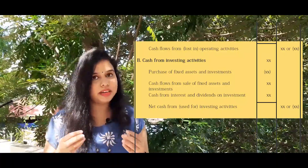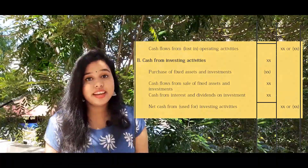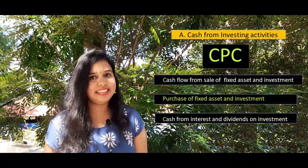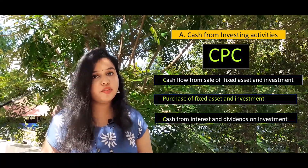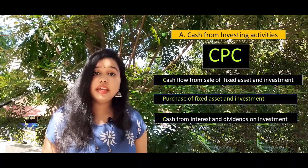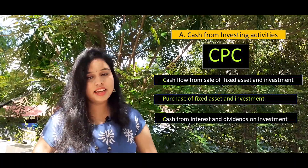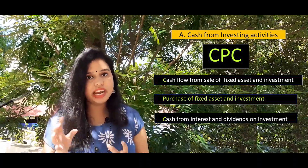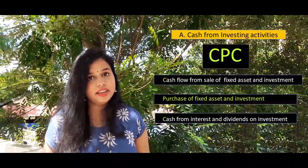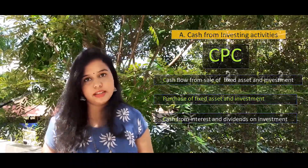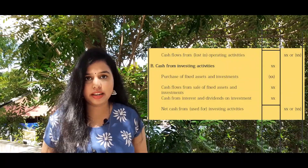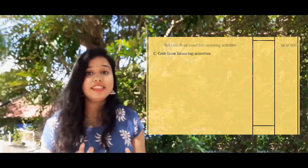Part B is cash from investing activities. The code is CPC: C for cash from sale of fixed assets and investments, P for purchase of fixed assets and investments, and C for cash from interest and dividends on investments. The total is net cash from investing activities.